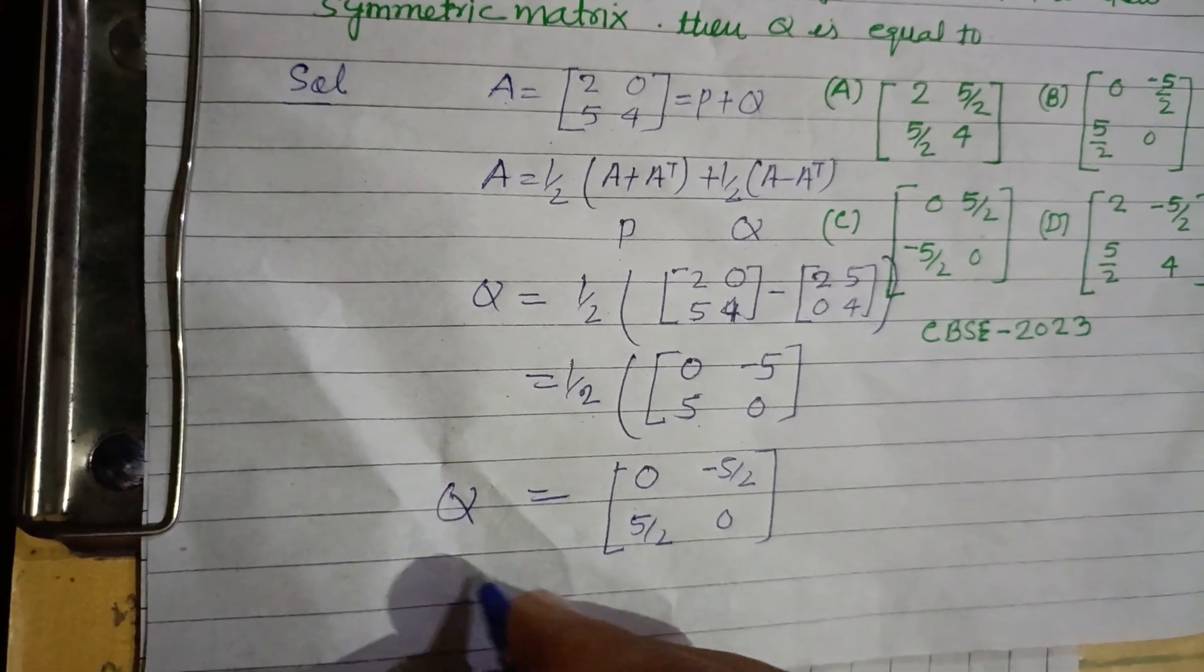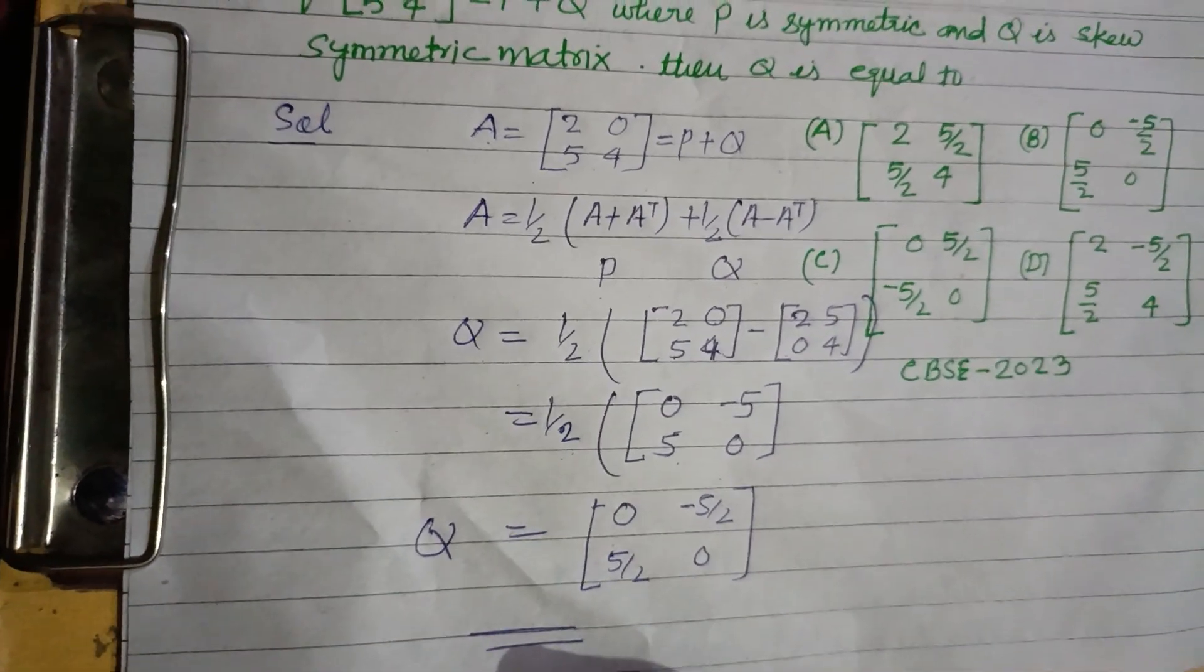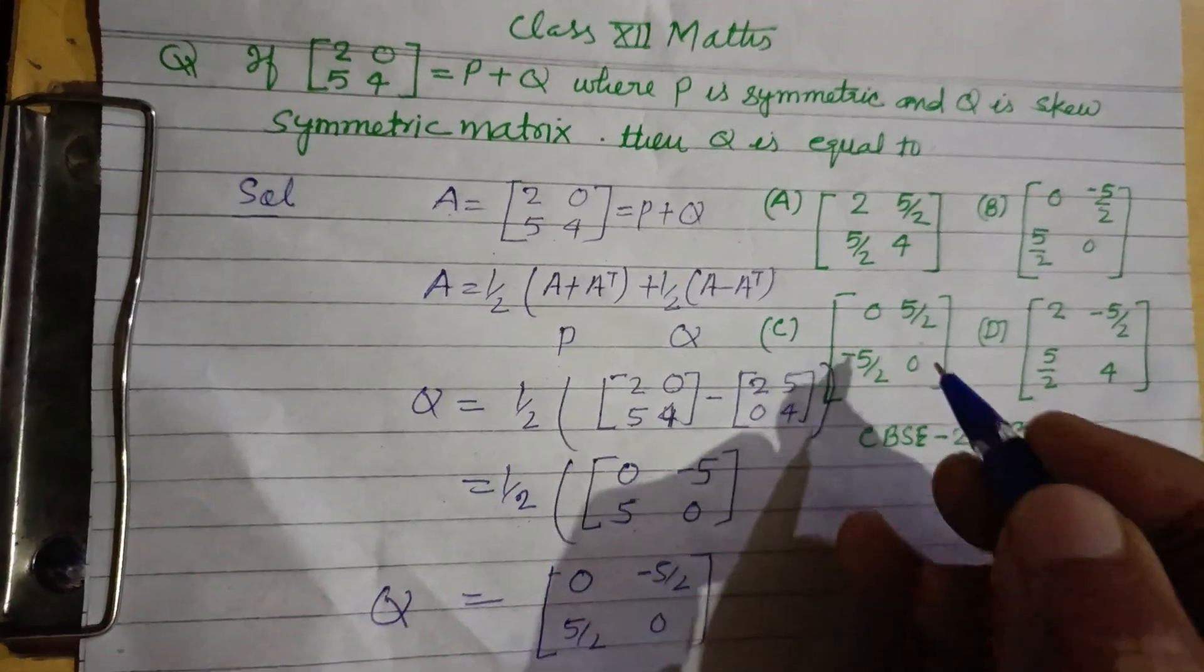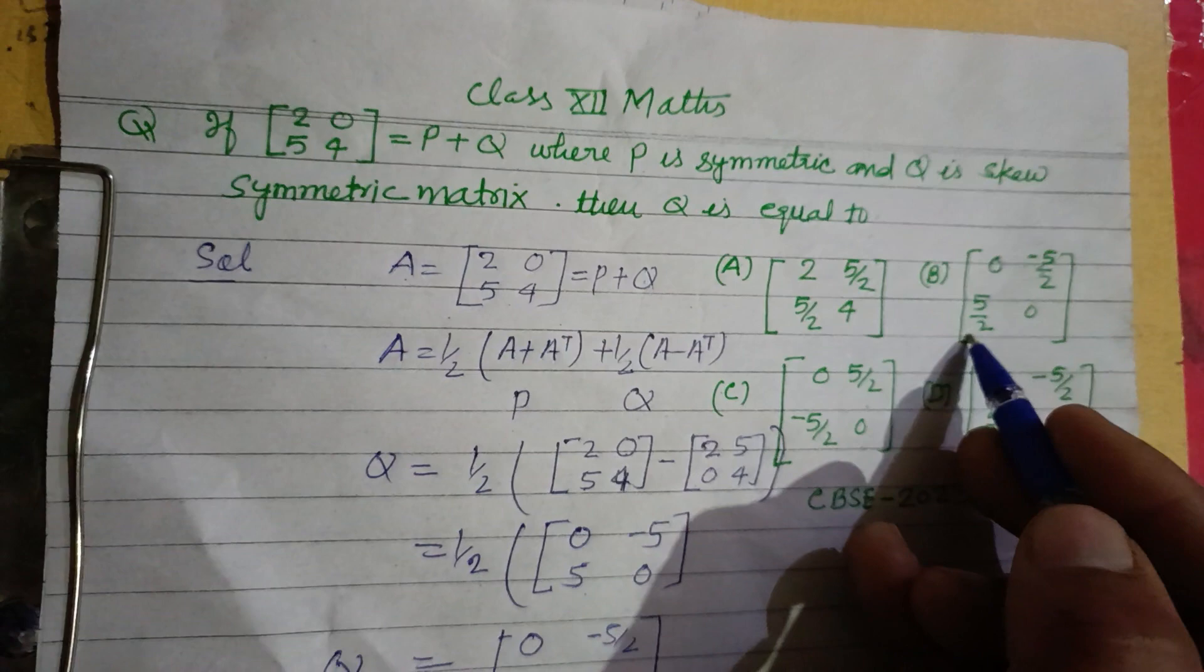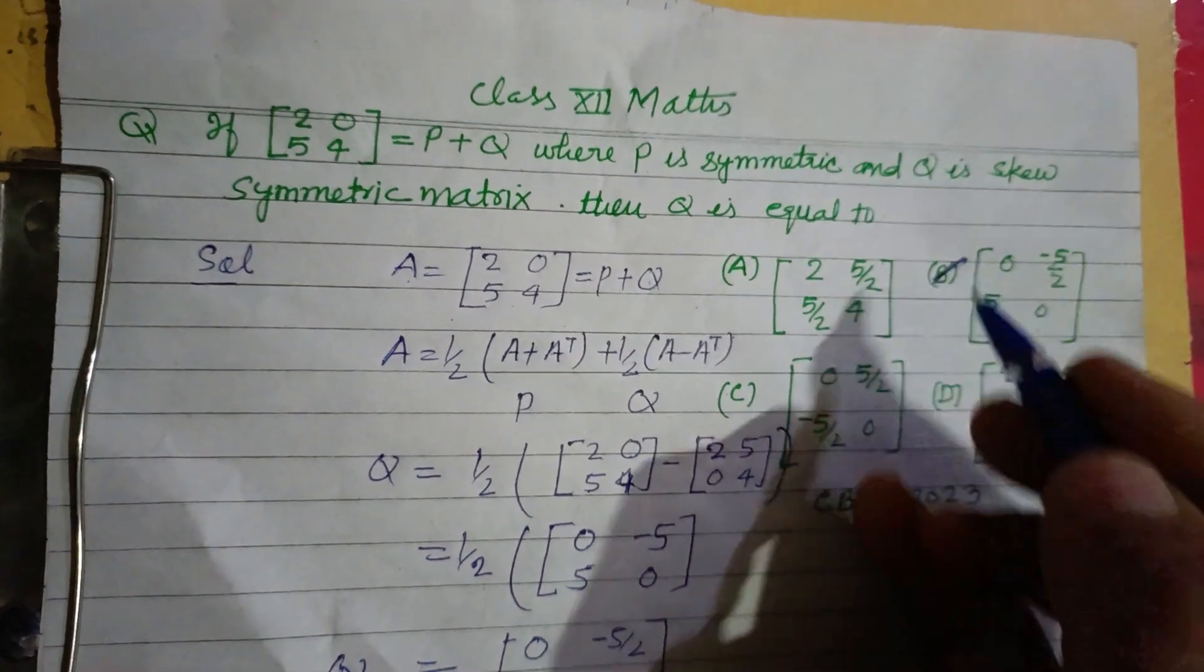Therefore, we obtain Q easily from here, which is [0 -5/2; 5/2 0]. So option B is the correct answer to this question.